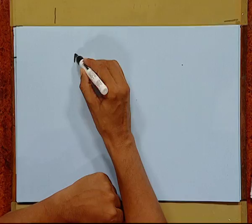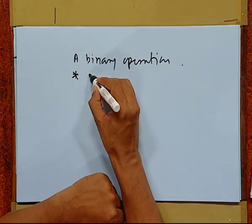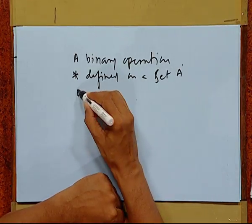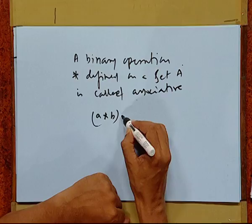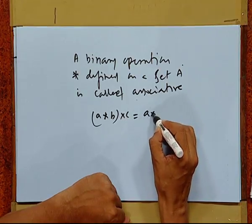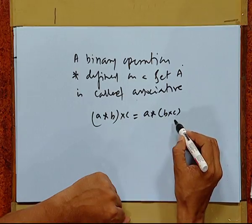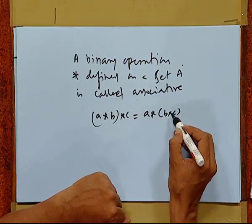There is one more kind of operation called associative. A binary operation star defined on a set A is called associative if (A star B) star C is equal to A star (B star C). The bracket is first with A and B; in the second case it is B and C. If both of these give the same result, we say the operation is associative.